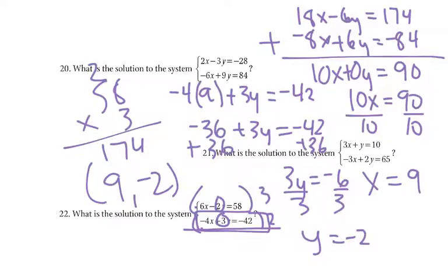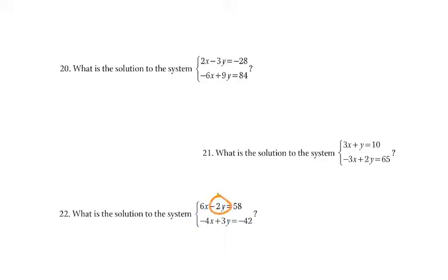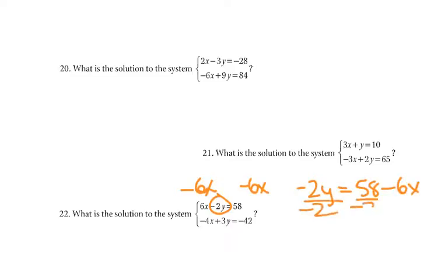Now if I did substitution, I'd have to figure out which variable to solve for. The way I'd do that is look at this and say: can 3 go into 4? No. Can negative 4 go into 3? No. Can 6 go into 2? No. Can 2 go into 6? Yes. Can 2 go into 58? Yes. Boom — we're solving for that variable. So I'd subtract 6x, giving me negative 2y equals 58 minus 6x, then divide by negative 2.